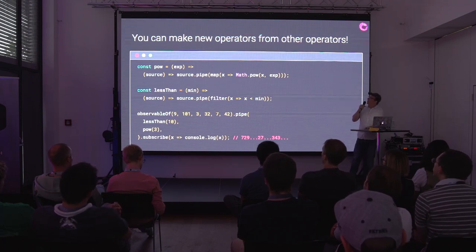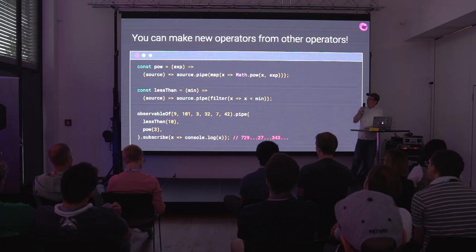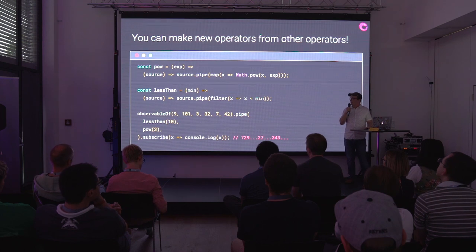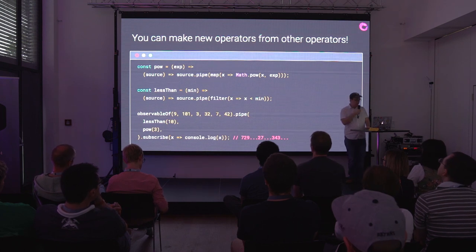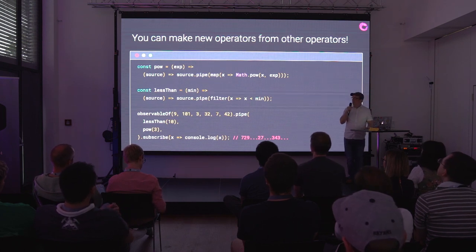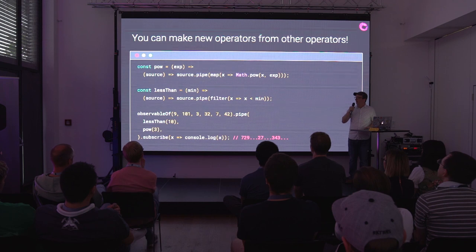You can actually make new operators from other operators in RxJS 6. You can define a pow operator that takes some exponent value and returns a function that takes the source observable and returns a new observable, using map inside of that other function because it returns an observable.